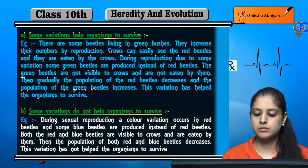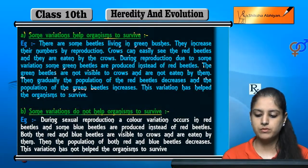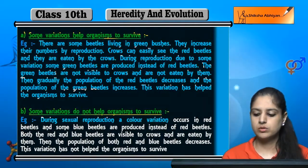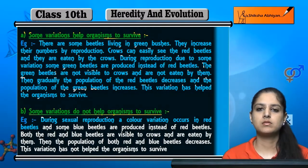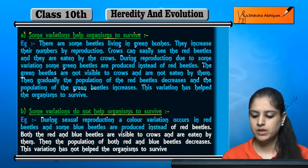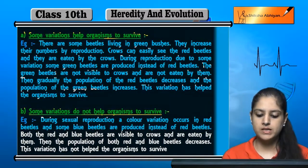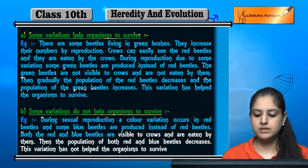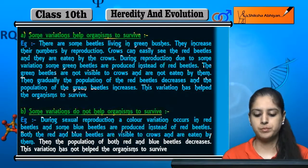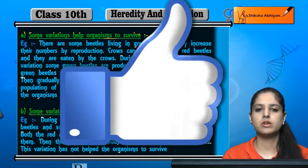Some variations do not help organism to survive. Par kuch variations aise bhi hote hain jo ki survival mein help nahi karti hain. During sexual reproduction, ek color variation hota hai in red beetles — red beetles ke andar color variation hota hai. Aur is color variation se blue beetles jo hain woh produce ho jaate hain instead of red beetles. Both red and blue beetles, yeh dono hi crows ko aasani se nazar aa jaate hain, aur ultimately crows eat them. Then the population of both the beetles — red and blue — decreases. This variation has not helped the organism to survive.